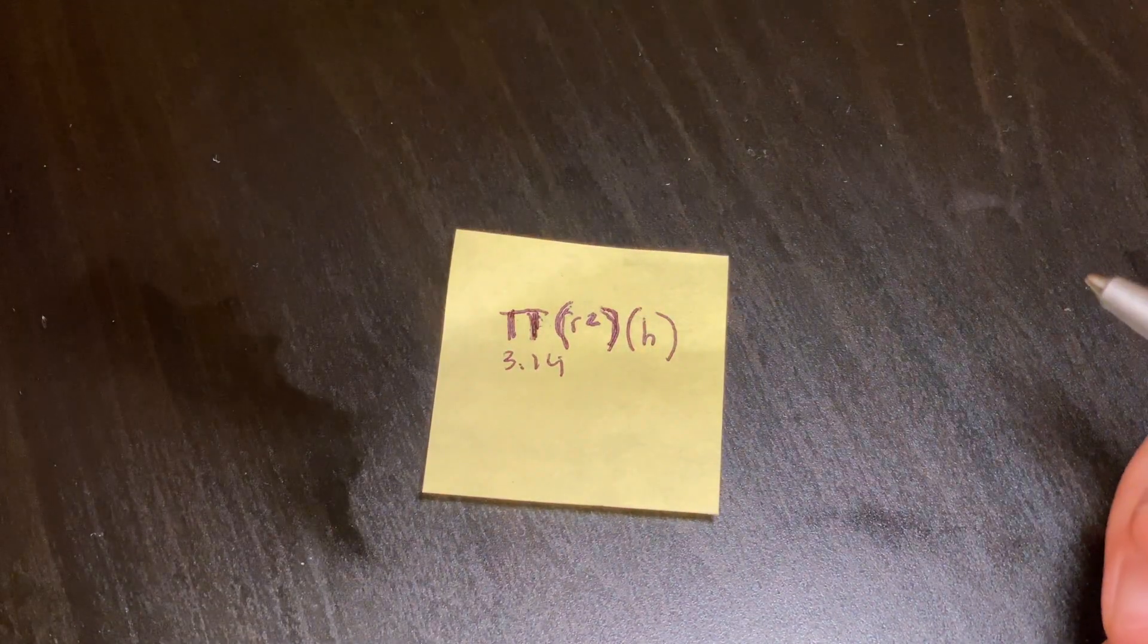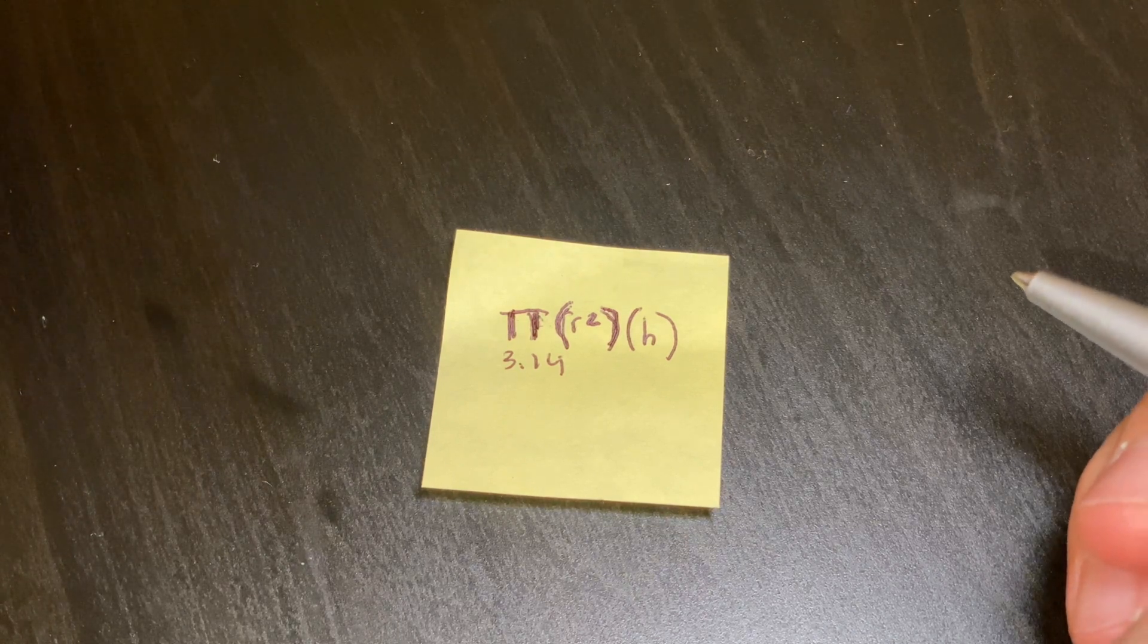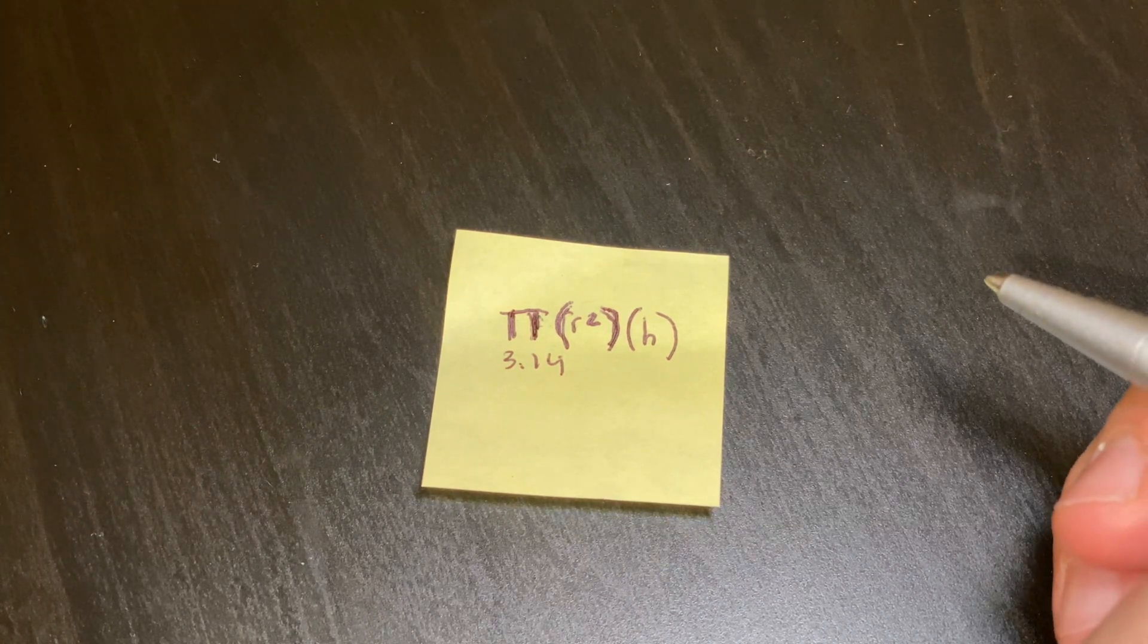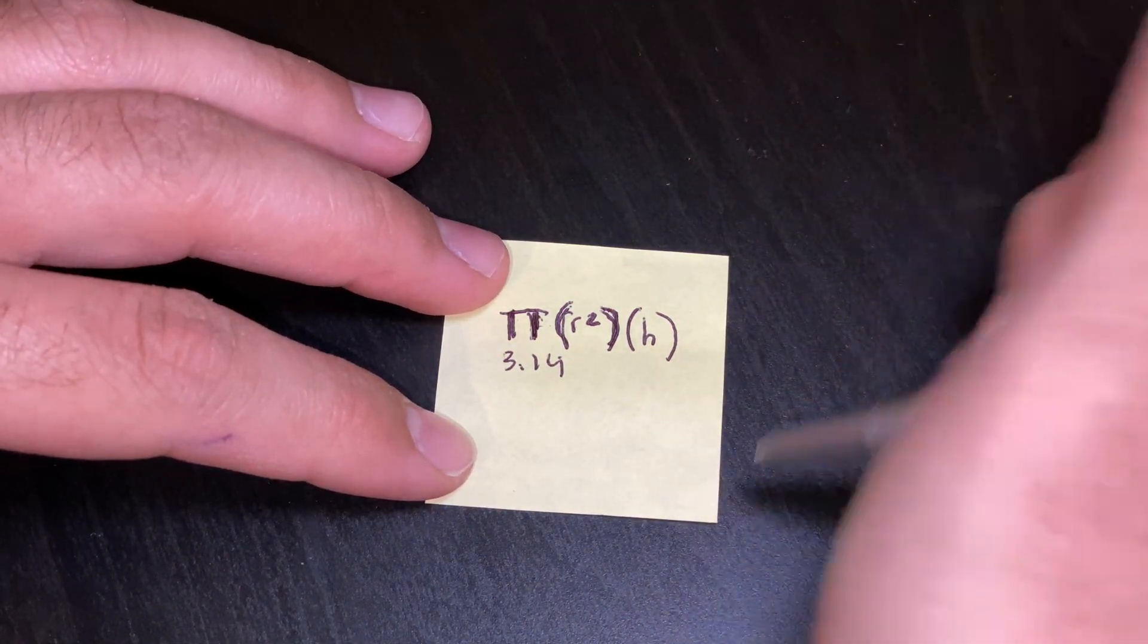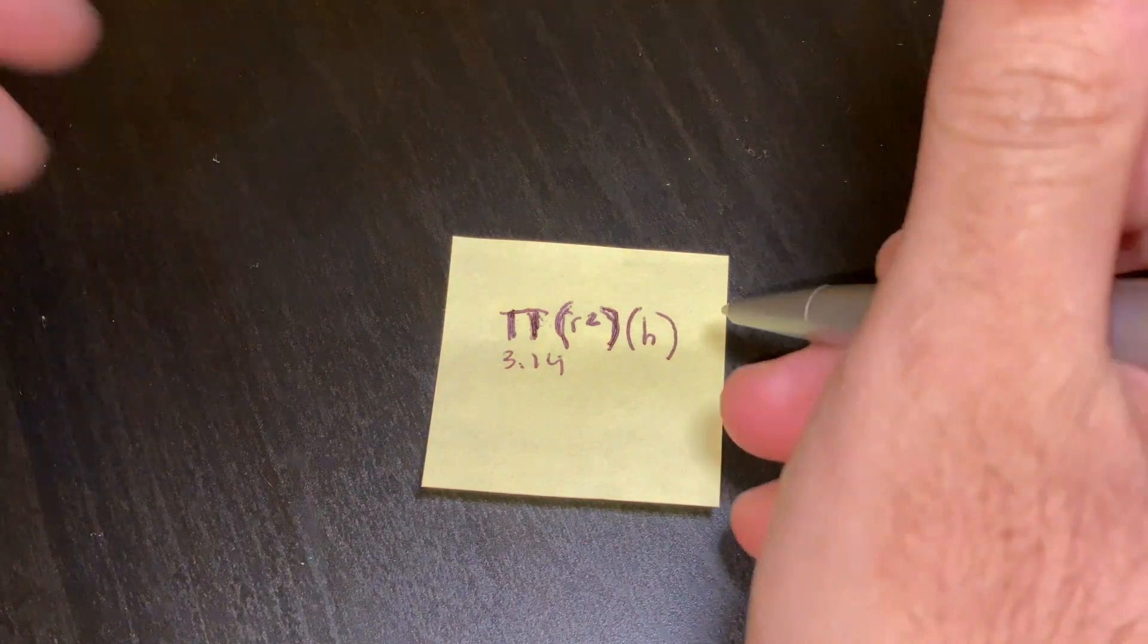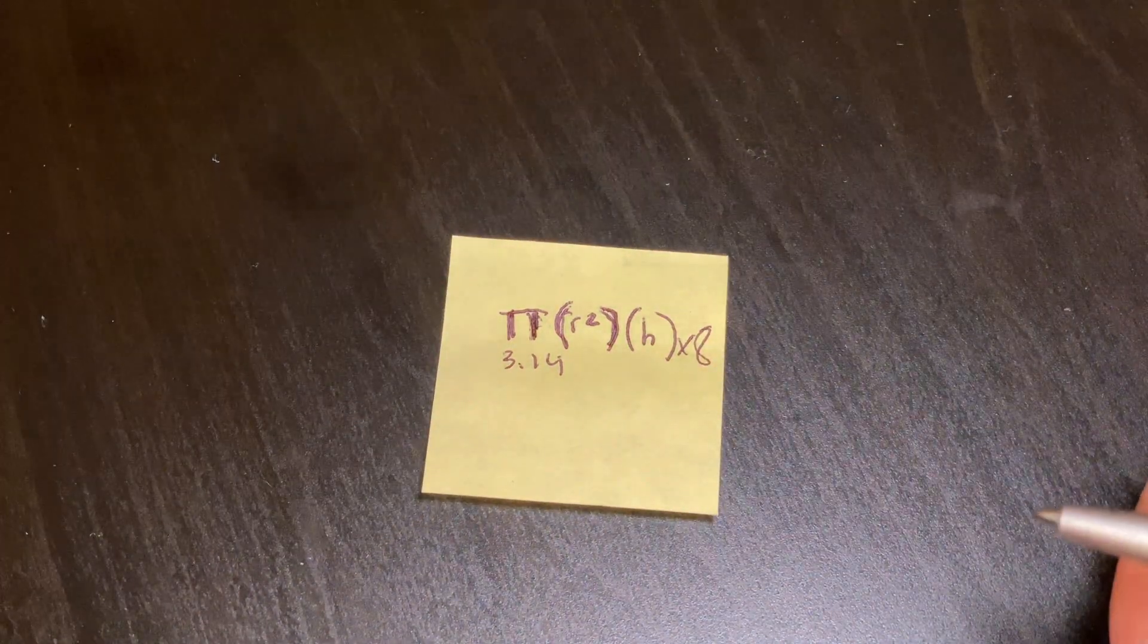Now obviously unless the engine that you're finding the volume for is a lawnmower engine which is a one cylinder, you're probably going to need to multiply this formula by the number of cylinders you have. So if it's let's say a V8 you would multiply it by eight and that's how you would find the volume.